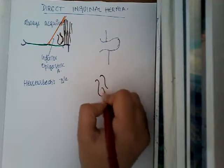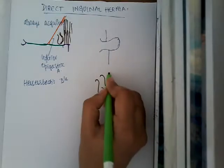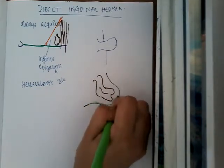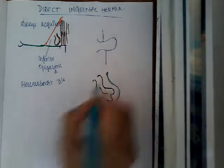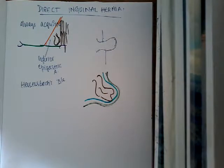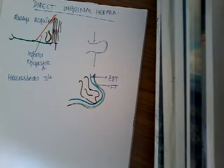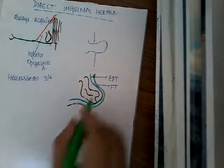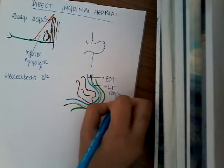The coverings of direct inguinal hernia are the coverings of the abdominal wall. These are the intestines which have come out through the direct inguinal hernia. Just above the hernia, there is a fascia called fascia transversalis. Before the fascia transversalis, there is extraperitoneal tissue. Just above the fascia transversalis, there is conjoined tendon.